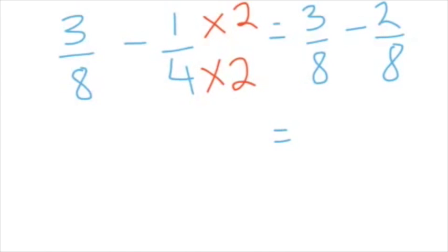3 eighths minus 2 eighths. Now, we never take away from the bottom number, the denominator. We only do the subtraction on the top numbers, the numerators. So 3 minus 2 is 1. And the denominator stays the same. So it's 1 eighth.